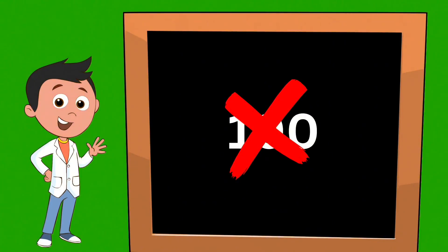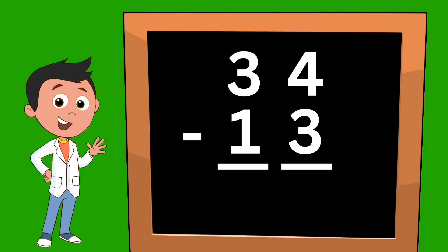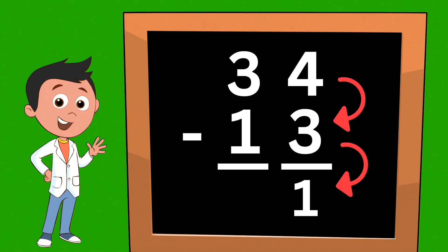Let's take those double-digit numbers and put them into a subtraction equation. Thirty-four minus thirteen. We're going to start with our ones on the right side. So we're going to start with four and we're going to subtract three. Four minus three equals one.